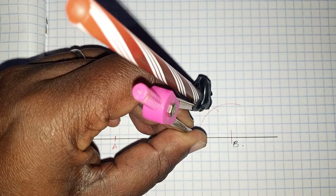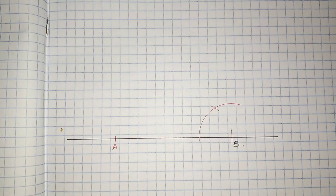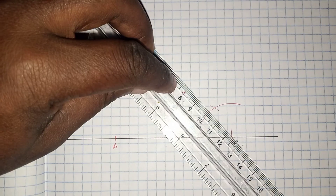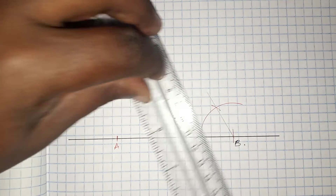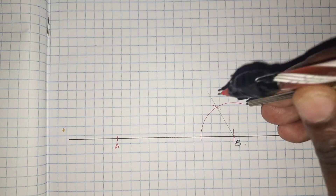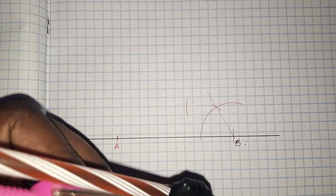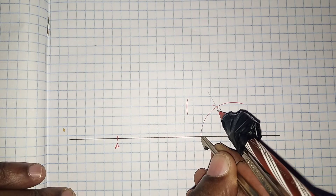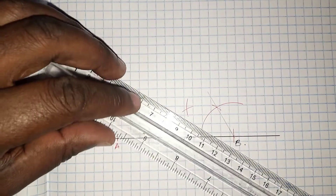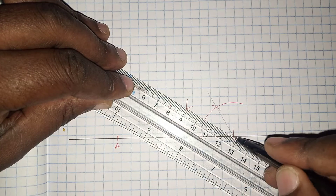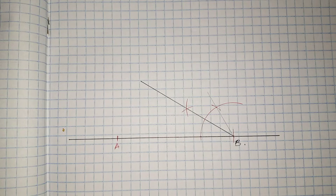We can bisect an angle of 60 degrees to come up with 30 degrees, and that is exactly what we are going to do. From point B we construct an angle of 60 degrees. We then place our compass on the arc, make an arc, and using the same radius place our compass at the other point and construct another arc. This gives us the angle of 30 degrees.